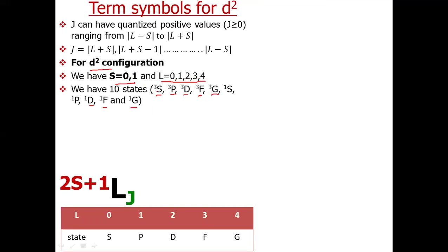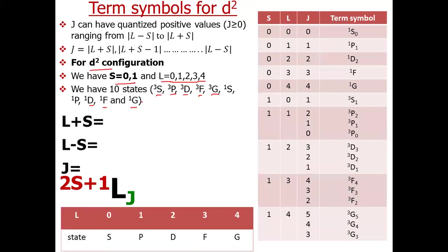Now calculating J for all these permutations — there are 10 cases — when we find the complete term symbols including J values, we get a total of 18 term symbols for the D2 configuration.